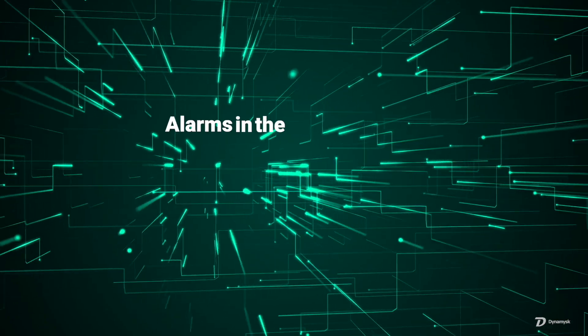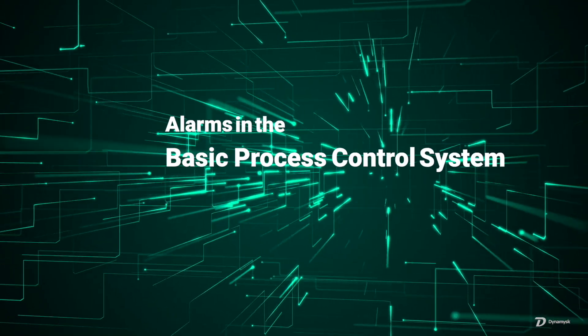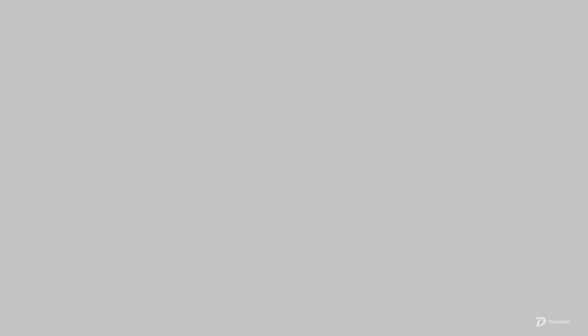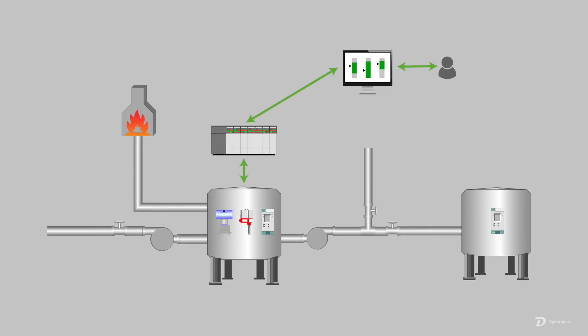Let's break the automation system back down for simplicity again, so we can talk about how digitalization may help the individual areas of process automation. Alarms, for example — alarms in the basic process control system. When a plant or section of the plant goes into a process upset condition, alarms start to ring into operations.